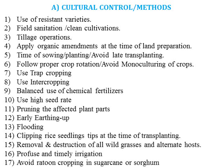Earthing up in crops like potato, sugarcane, or turmeric reduces the population of soil-borne insects. Flooding and alternate flooding and drying of the field also helps minimize the attack of pests like rats or crabs. Clipping of rice seedling tips at the time of transplanting minimizes the attack of the stem borer. Removal and destruction of all wild grasses and alternate hosts in the field also helps reduce pest attack. Proper and timely irrigation is required for healthy plant growth, as water stress conditions can also lead to pest attack.